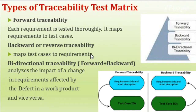Now we will look into the types of traceability test matrix. As shown in the diagram, we have three types: forward traceability, backward traceability, and bidirectional traceability. In forward traceability, requirement IDs are mapped to test case IDs. In backward traceability, test case IDs are mapped to requirement IDs. In bidirectional traceability, both forward and backward procedures are followed.